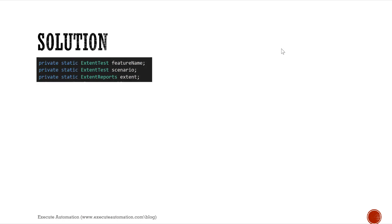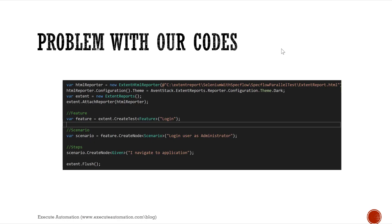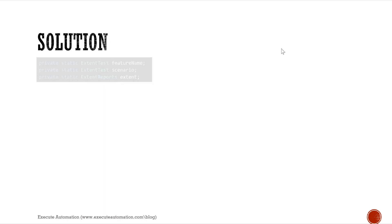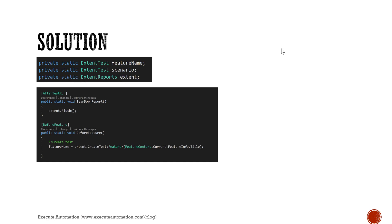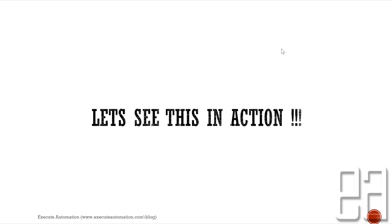As you can see here, we can move all the reusable variables to global scope. Then we can make use of after test to flush the report — in our last video we created extent dot flush, and that's exactly what we're going to do in the after test. In before feature we can actually create the feature using the feature context, and in before scenario we can use scenario context dot current dot scenario info dot title to get the scenario context. It's all that easy.